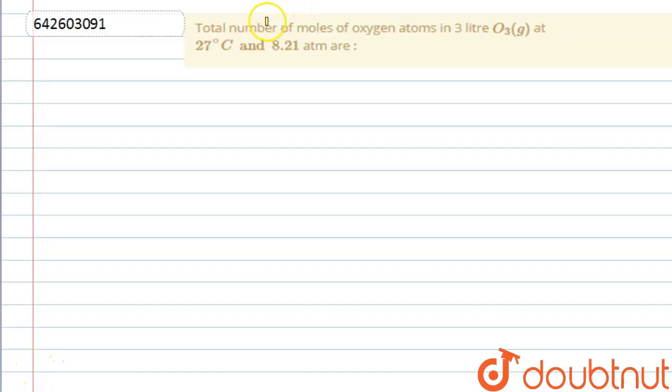Hello everyone, let's start with this question. The question says the total number of moles of oxygen atoms in 3 liter of O3 at 27 degrees Celsius and 8.21 atmosphere are.